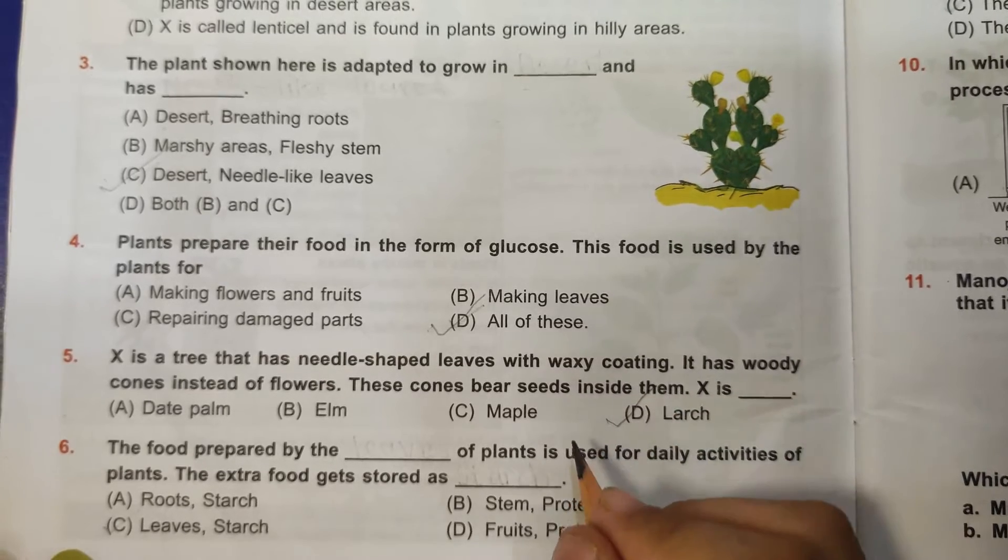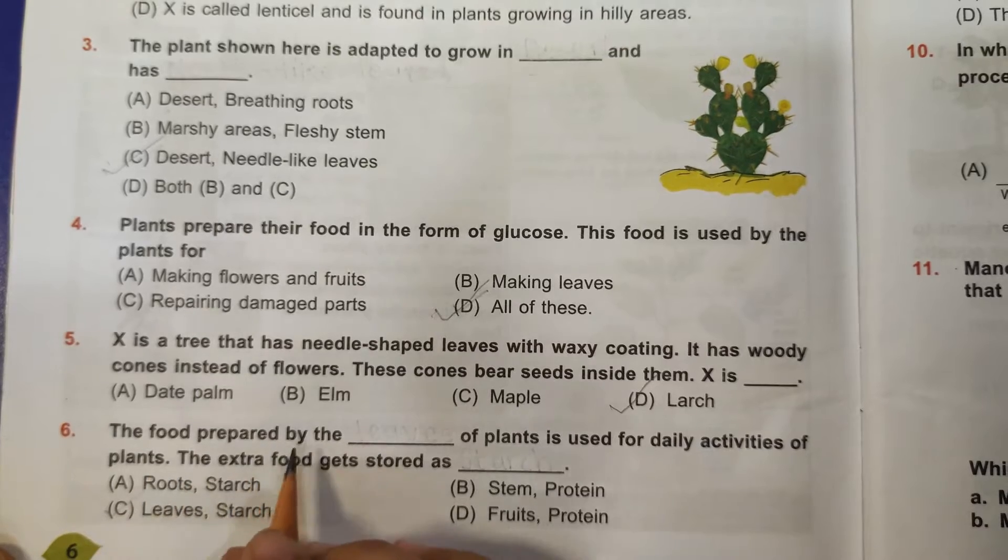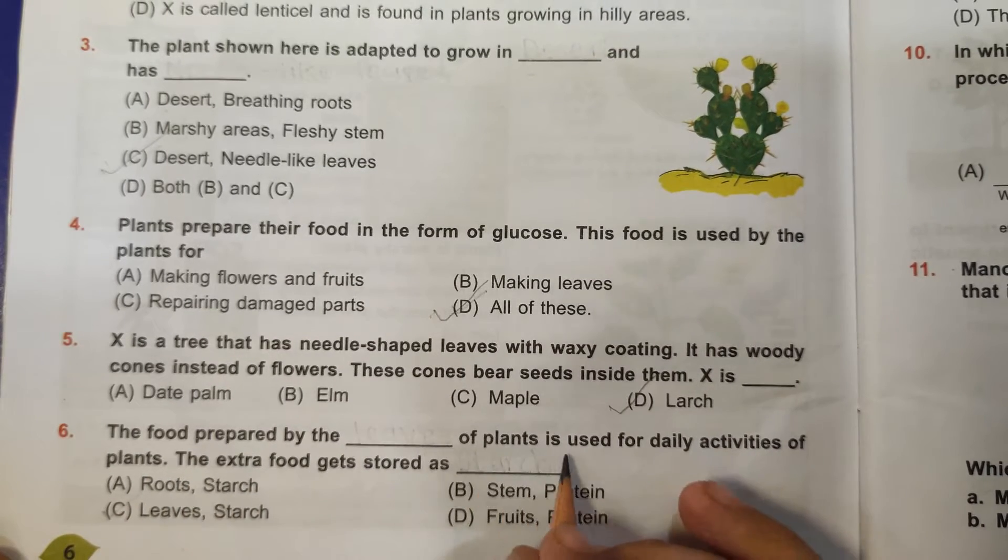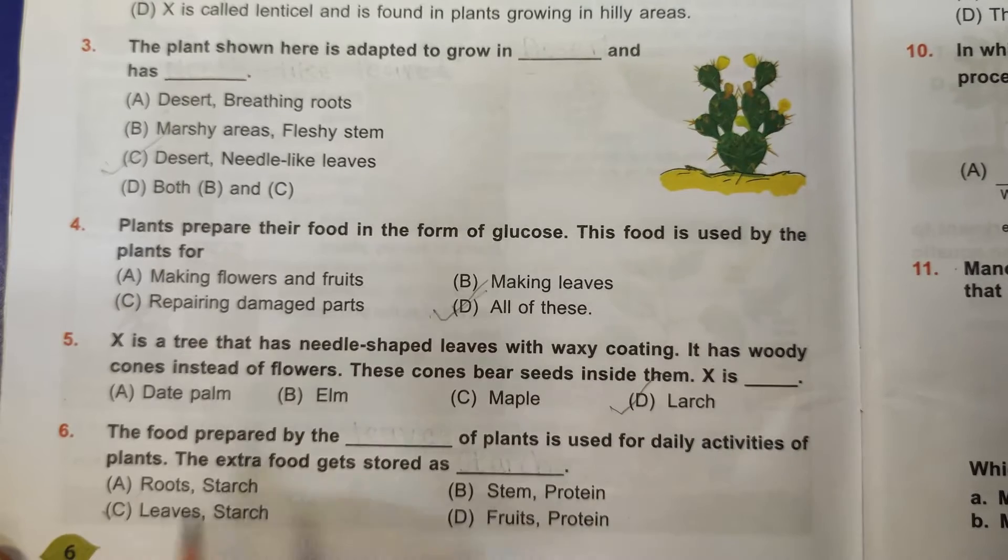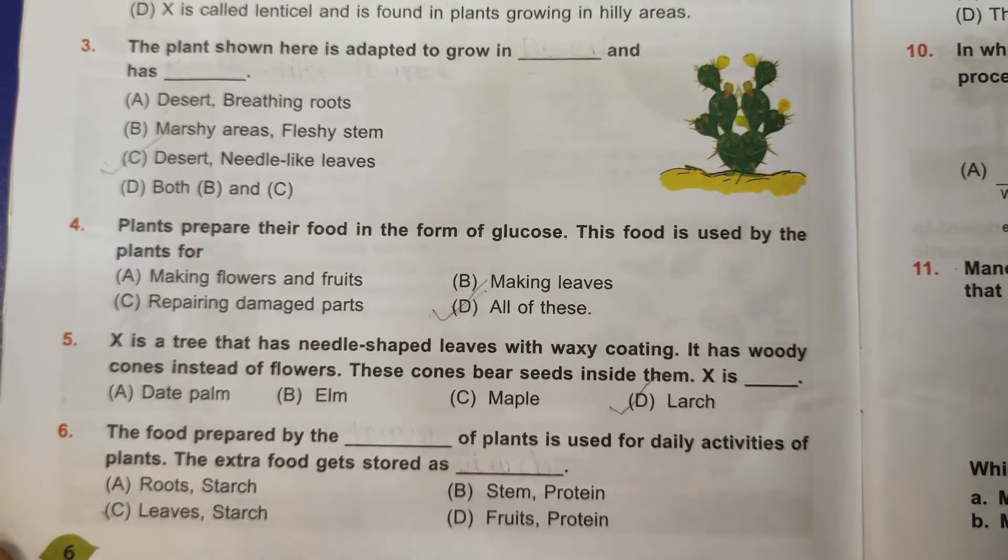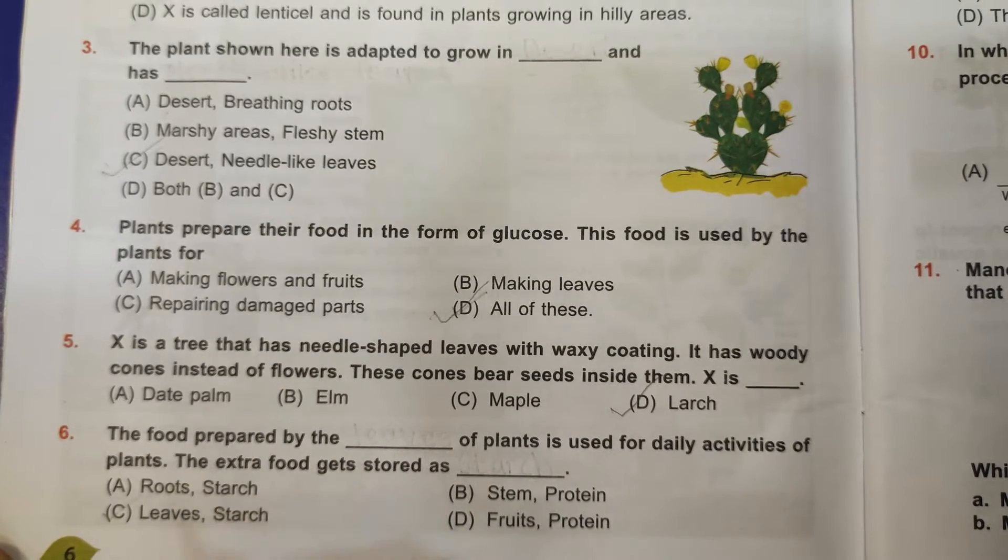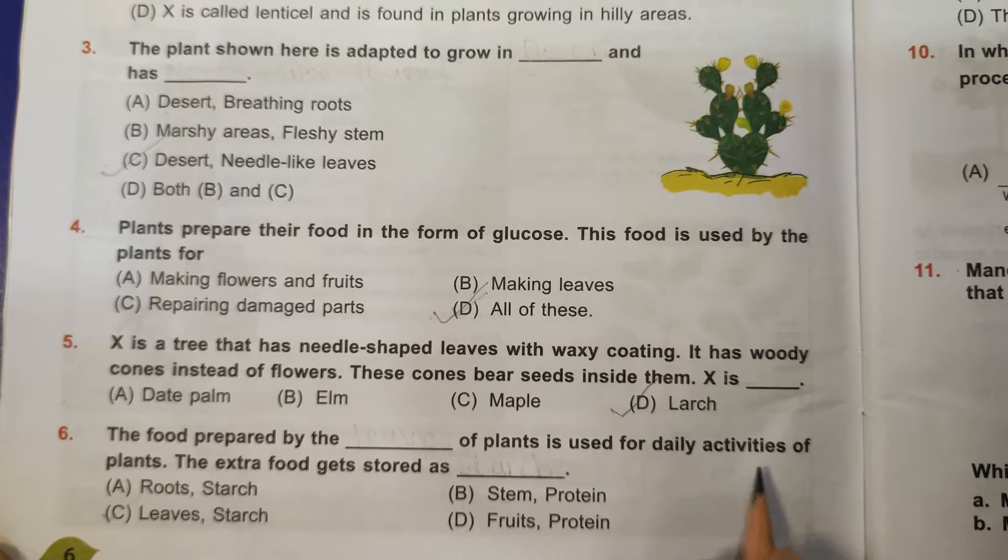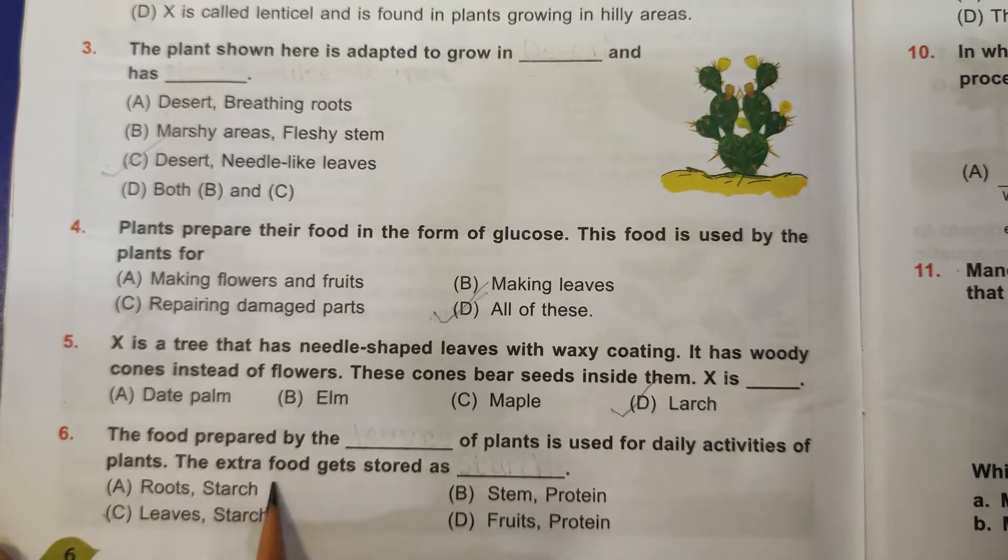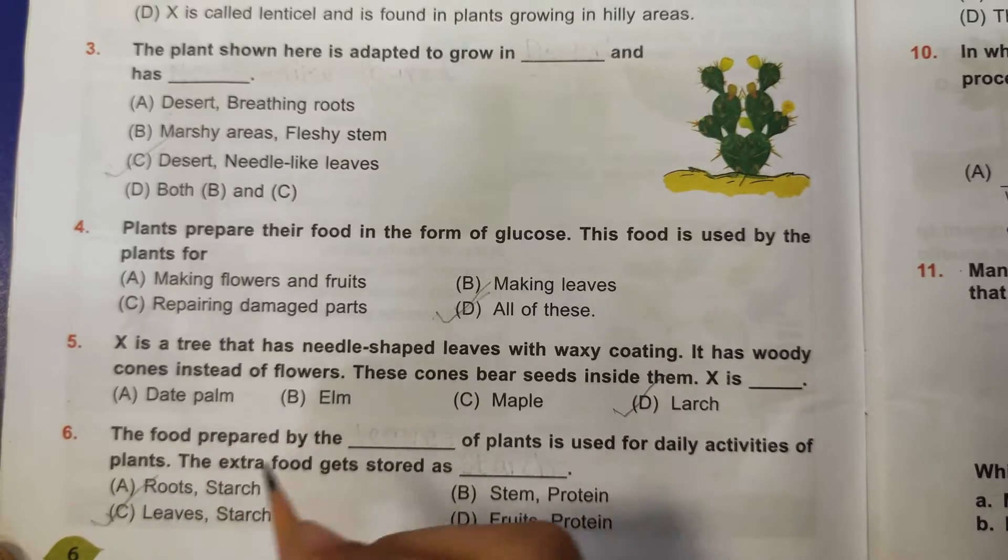Sixth question: the food prepared by the leaves of plants is used for daily activities of plants. The extra food gets stored as starch. So C, leaves comma starch, is the correct answer.